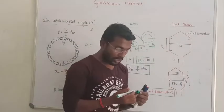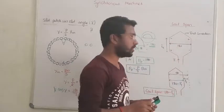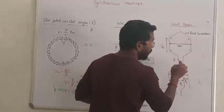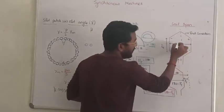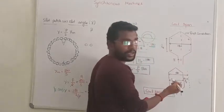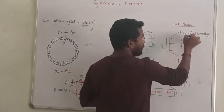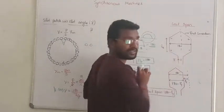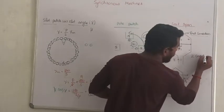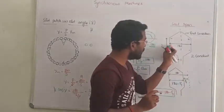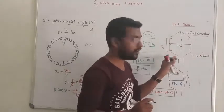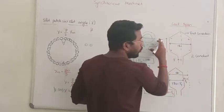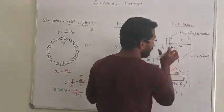Next, we are going to discuss coil span. Coil span: a complete turn has two coil sides, and one turn gives us two conductors. The coil span denotes the phase difference between the two coil sides of a turn. Over a turn there are two coil sides, and that phase difference is the coil span.